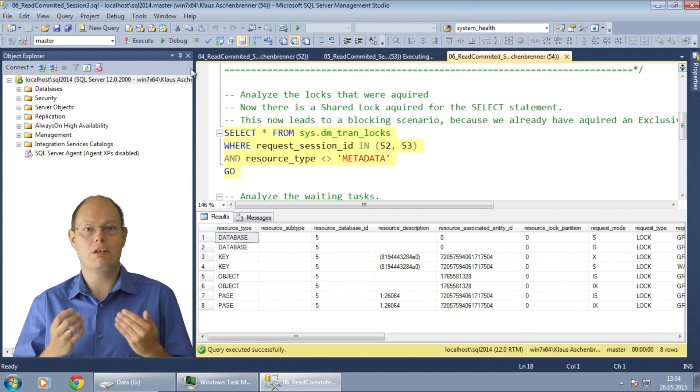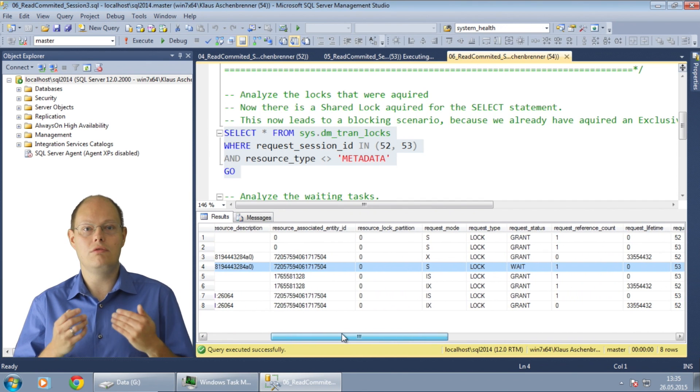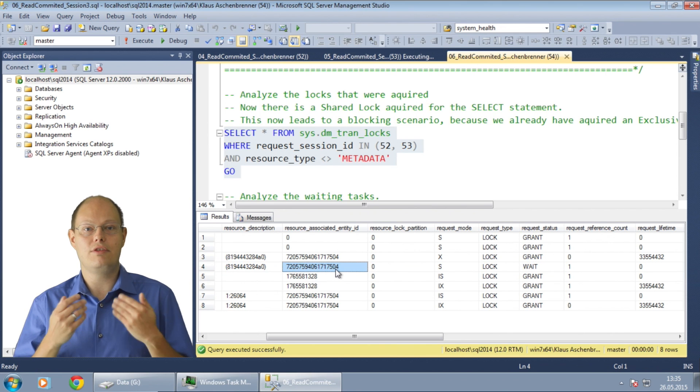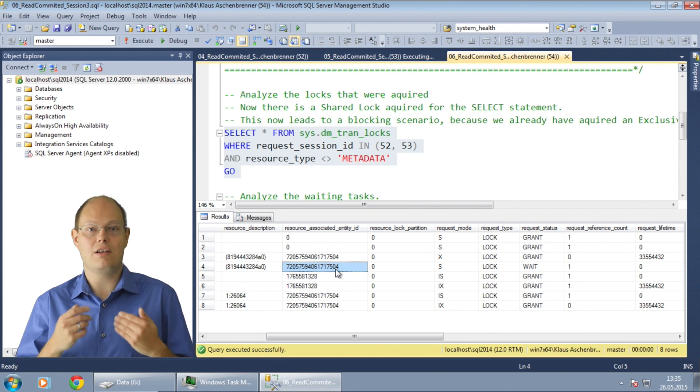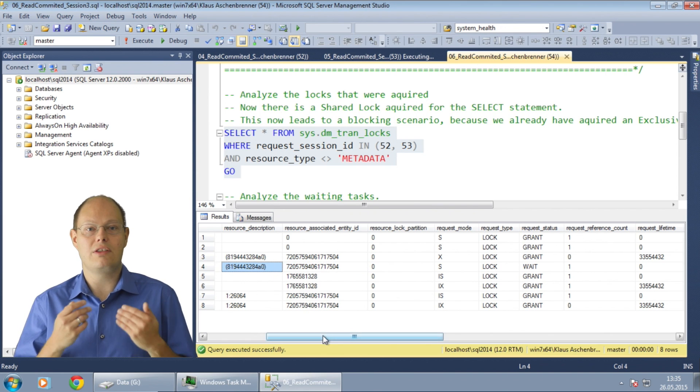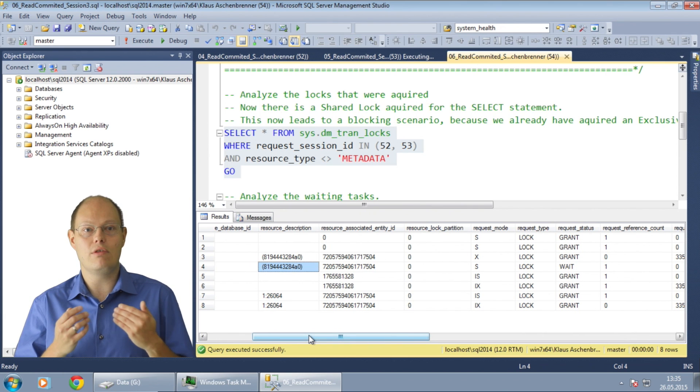When we restrict here on both session IDs you can see now that our second session waits on a shared lock. The column resource_associated_entity_id returns you the ID of the allocation unit. With that ID and some other system views it is very easy to find out on which data or index the blocking situation happened. And the column resource_description tells you the hash value of the key value on which the lock was placed.